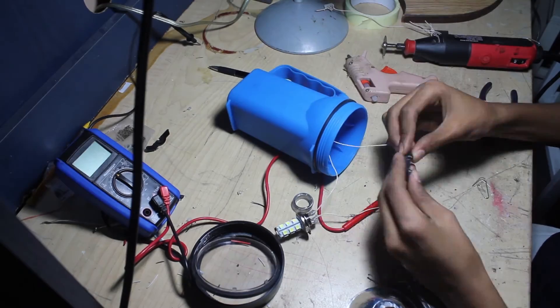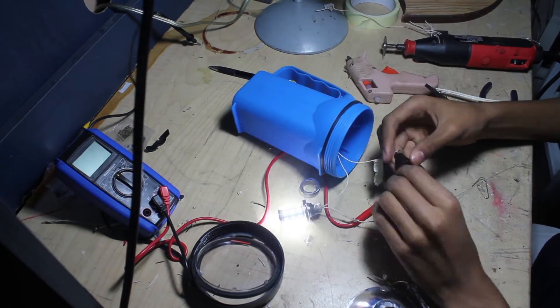Once that was done, I used hot glue to secure the bulb, the switch, the three batteries, the two modules, and all the wires.